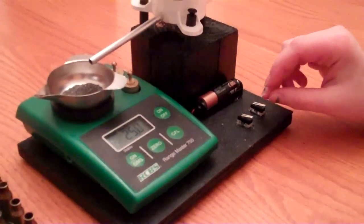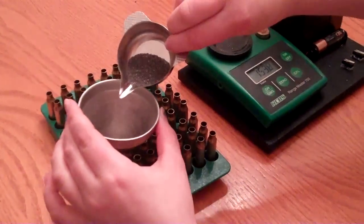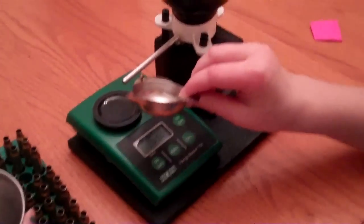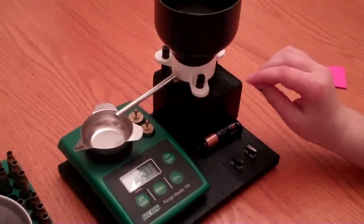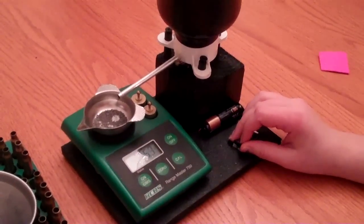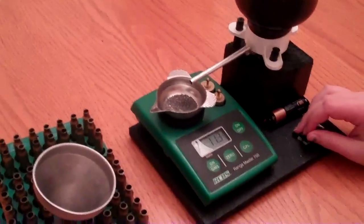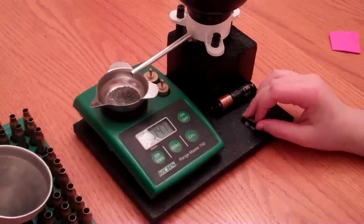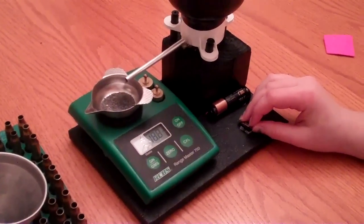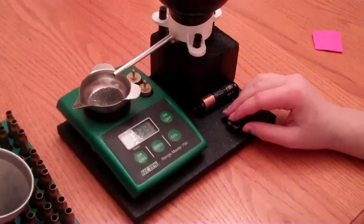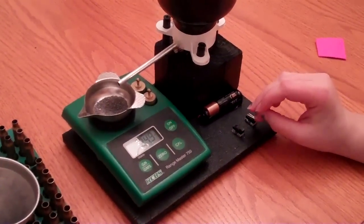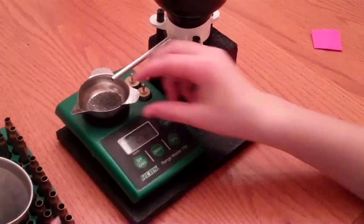And as you can see it just runs on one double A battery. All right so hopefully these will be some super accurate loads and really worth the time weighing them out versus actually just measuring it by volume in my Hornady powder thrower or the Lee or the Dillon. I have all three of them. So if you have any questions please leave a comment below and subscribe to my channel.